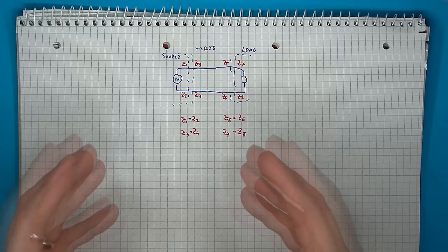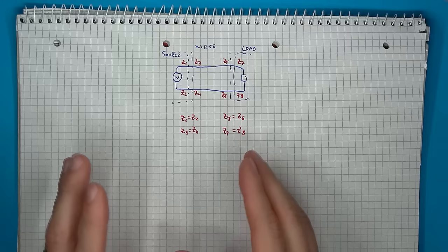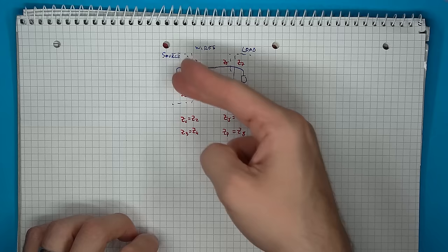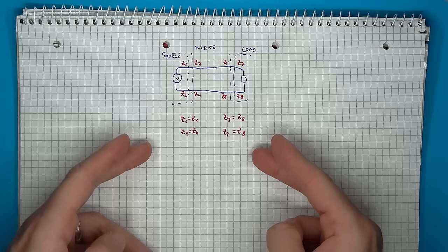Now, it's important to point out that to keep the system balanced, the interconnected impedances do not have to be equal. So, that's something else. So, for example, Z1 does not have to be equal to Z3. Only the other impedances need to be equal.